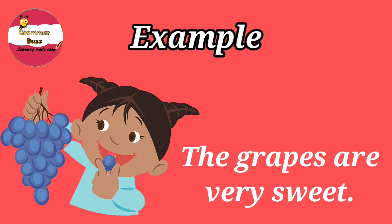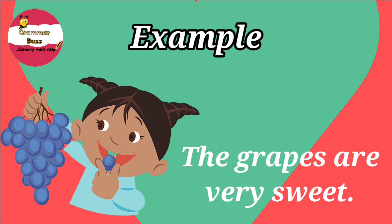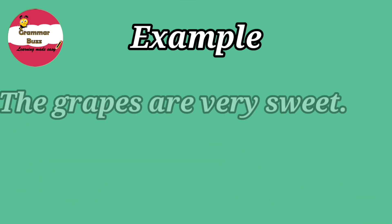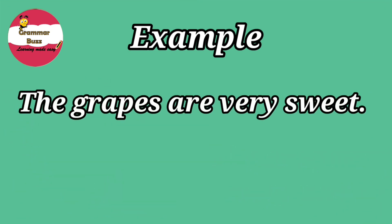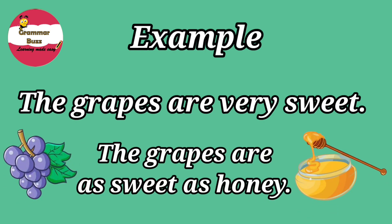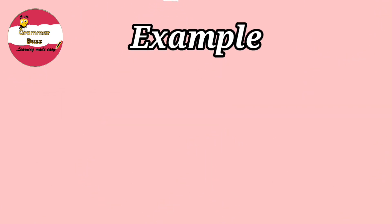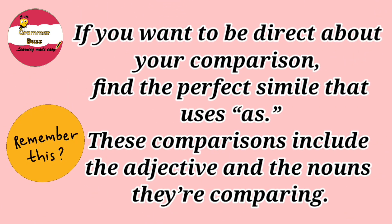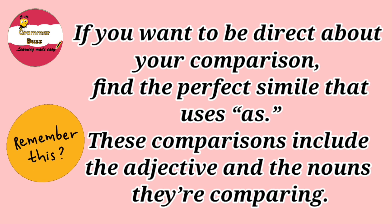Have a look at this sentence: 'The grapes are very sweet.' This sentence is surely not a simile. But let us try to change this into a simile — let's use a simile to describe the sweetness of the grapes. We could say: 'The grapes are as sweet as honey.' If you want to be direct about your comparisons, you need to find a perfect simile that uses 'as.' These comparisons include an adjective and the nouns being compared, so with 'as' similes, we always need an adjective.